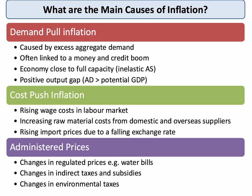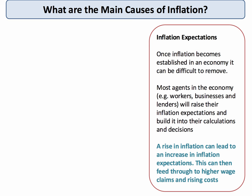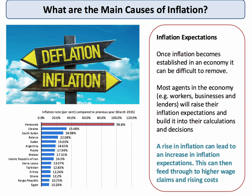This slide looks at the important distinction between demand pull and cost push inflation. It's quite important to recognise that once inflation becomes established in an economy, it can be quite hard to get rid of — in other words, we see a rise in inflation expectations. When inflation goes up, let's say from 2% to 5%, agents in the economy — businesses, individual workers, banks — may change their expectations of what inflation will be in the year or two ahead. Workers might bid for higher wages, banks might increase interest rates on loans, and both are trying to protect the real value of their wage or lending returns. So inflation can be affected significantly by changes in inflation expectations, and that's worth bearing in mind when thinking about causation.